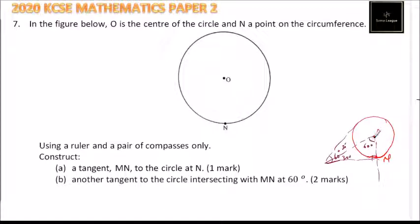If we construct an angle of 60 at this point, then we will be able to get where the point M is. Once we get point M, we can construct the tangent, the other tangent. So that's the process that we are going to do.